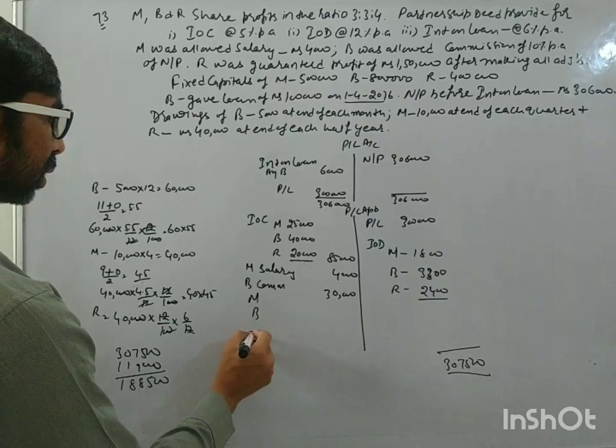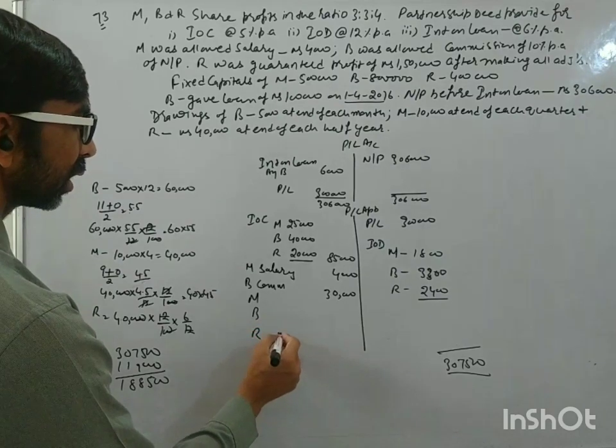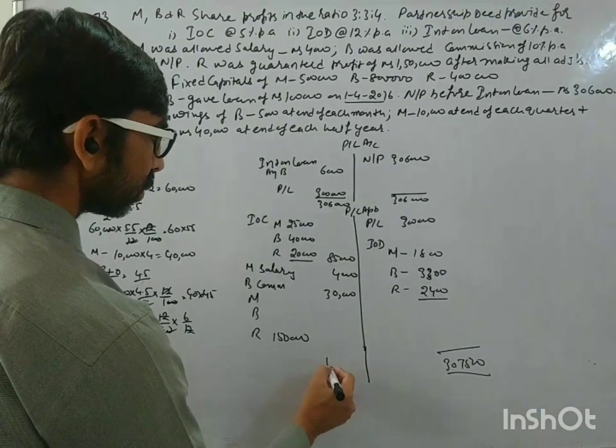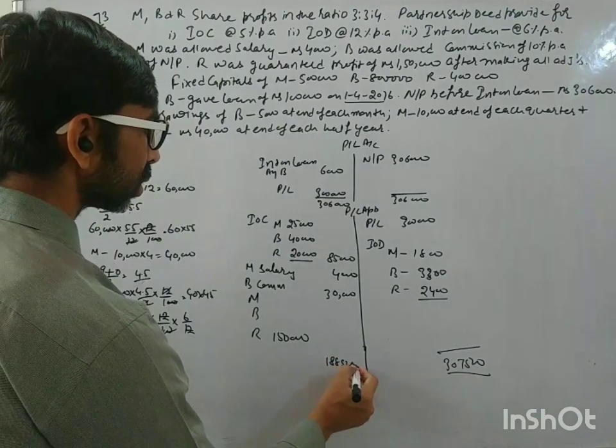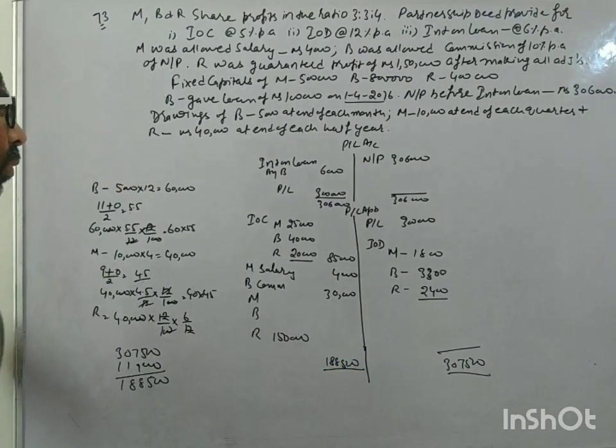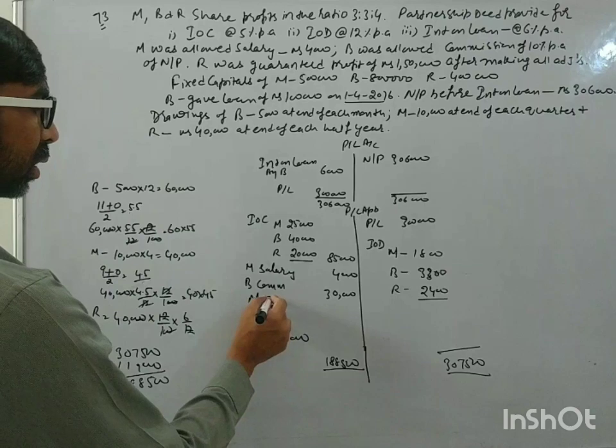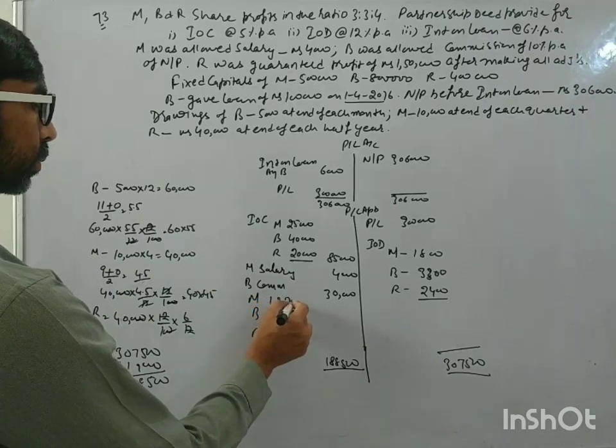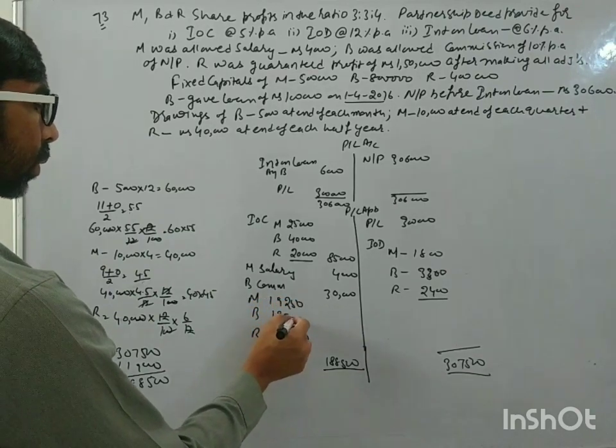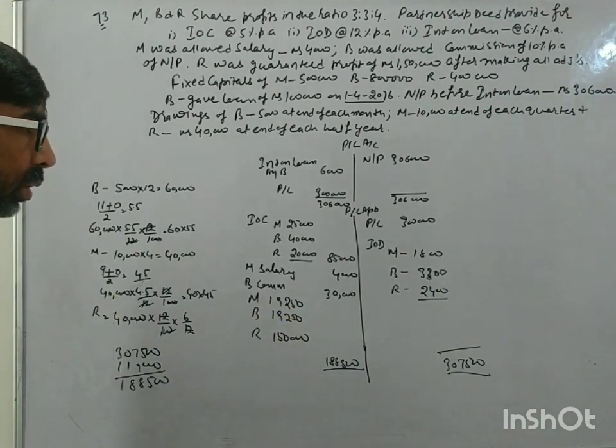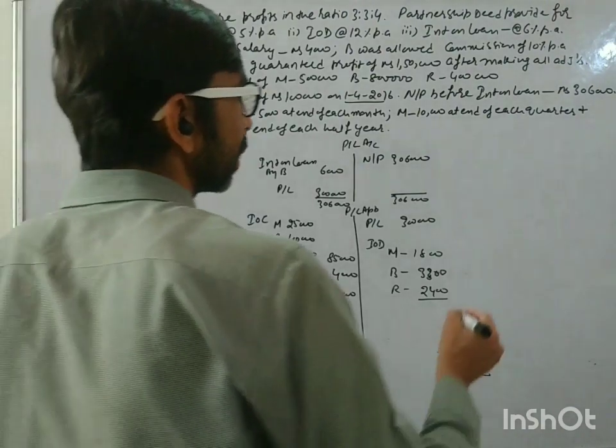Now M, B, R. R will get a minimum of 1,50,000. We have to distribute total distribution. So here what is left? 1,88,000. We will distribute in ratio 3:3:4. This is 56,250, 56,250, and 75,000. And now let's make the capital account.